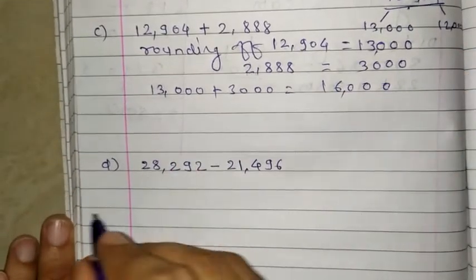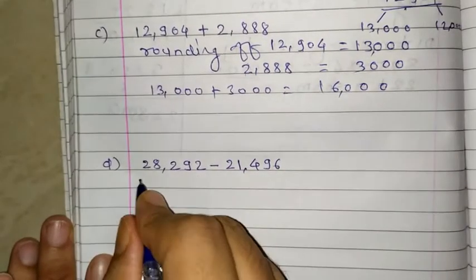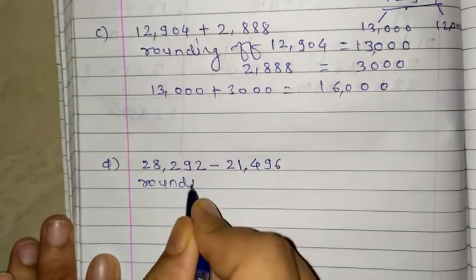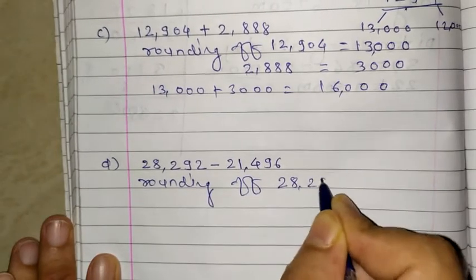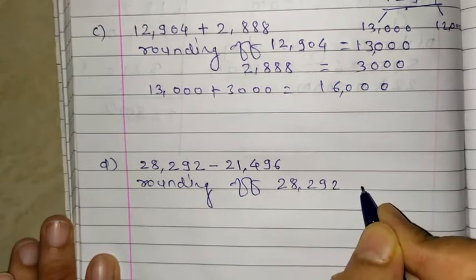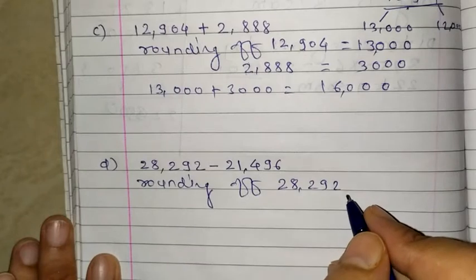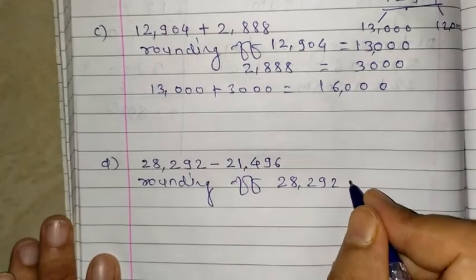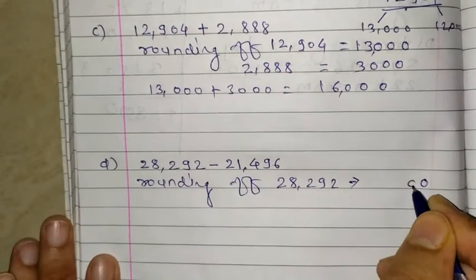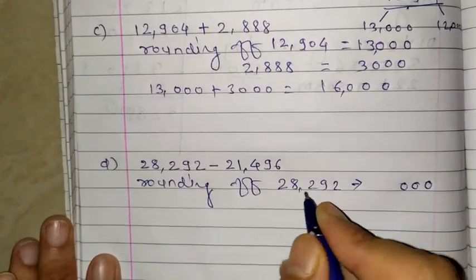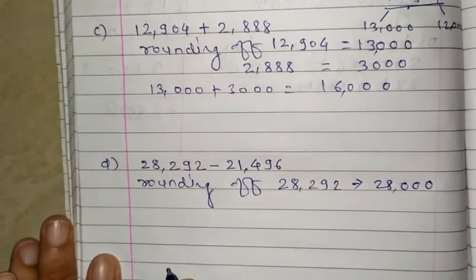Last number, last exercise of this question. Rounding of 28,292. This number is present in between 28,000 and 29,000, but we know it is closer to 28,000. You convert into nearest 1000, 3 zeros as it is. Here 2 is there, so 8 as it is. It means 28,000.